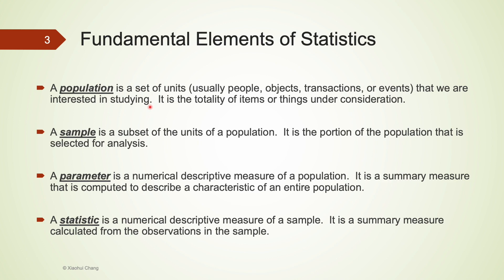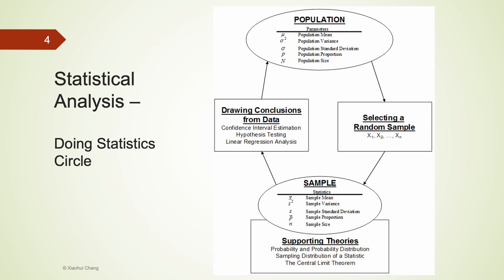An easy way to remember this: population and parameter both begin with the letter P, whereas sample and statistic both begin with the letter S. Here we have a circle known as the 'doing statistics circle.' At the very top are the quantities of interest — population parameters such as population mean, variance, and others, represented using different symbols.